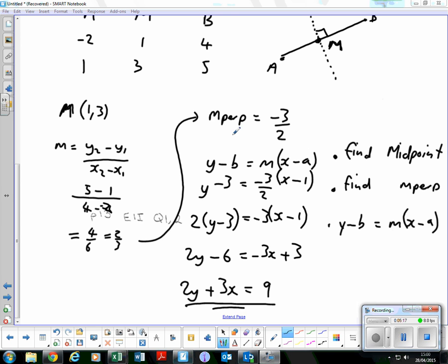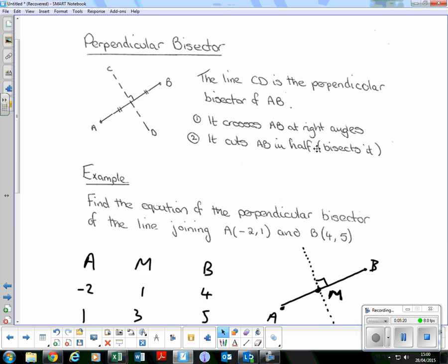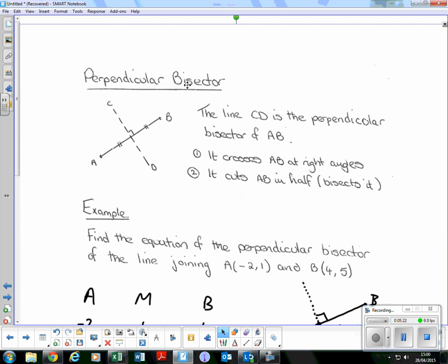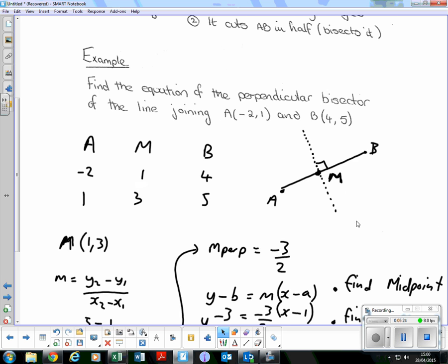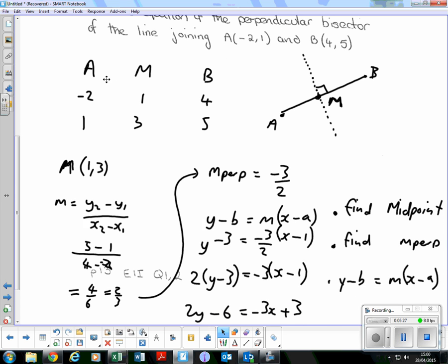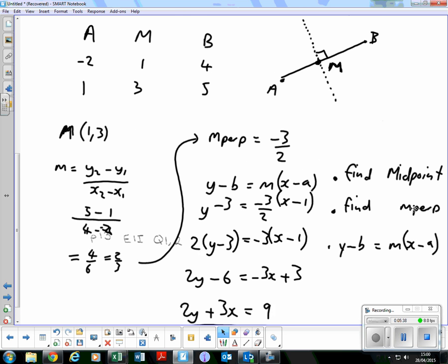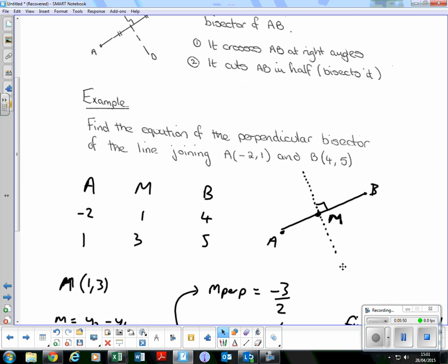So let's recap what we've done there then. We have to find the perpendicular bisector. First thing we need to do is find the midpoint. Then write down the coordinates of A and B. Go from -2 to 4. 1 is right in the middle of -2 and 4. Y coordinate 1 to 5. 3 is right in the middle. Then find the perpendicular gradient. So find the gradient of A and B, flip the fraction upside down, change the sign. And then we substitute it into y minus b equals mx minus a and that is how to find a perpendicular gradient.